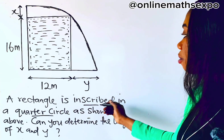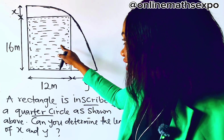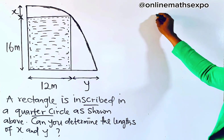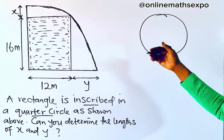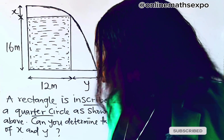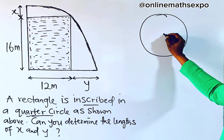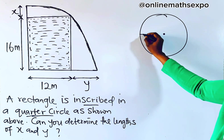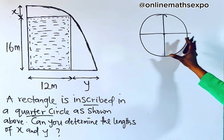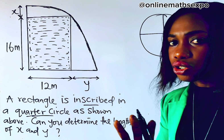The rectangle being inscribed means it is placed inside, as you can see. Now, a quarter circle — let's take it that this is a complete circle. A quarter circle is a circle that is partitioned into four equal parts; the word 'quarter' means four. So you divide this circle into four equal parts, and one part of it is just a quarter circle.